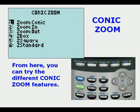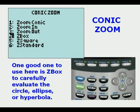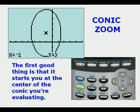From here you can try different conic zoom features. One good one to use here is Z Box or Zoom Box to carefully evaluate the circle, ellipse, or hyperbola. The first good thing is it starts you at the center of the conic you're evaluating.